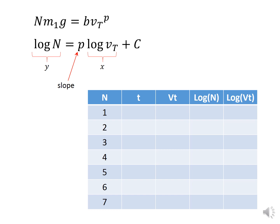You would then calculate the terminal speed V sub T. Again, the 98 inches converted to meters divided by the time. We will also have columns for the log of number of filters and the log of the terminal speed.